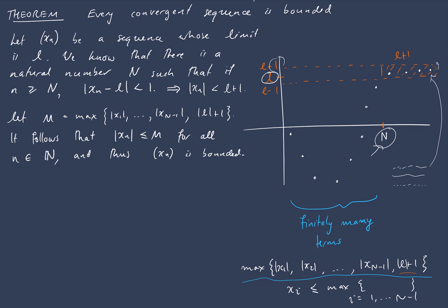Alright, so every time we have a convergent sequence, we also know that it's bounded because of this finitely many terms before we get within a size that we can specify.